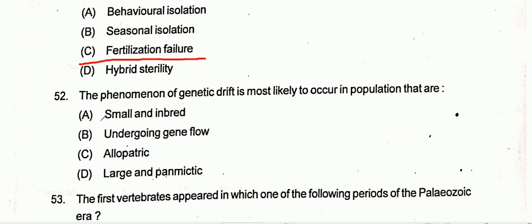Question number 52: The phenomenon of genetic drift is most likely to occur in populations that are small and inbred.